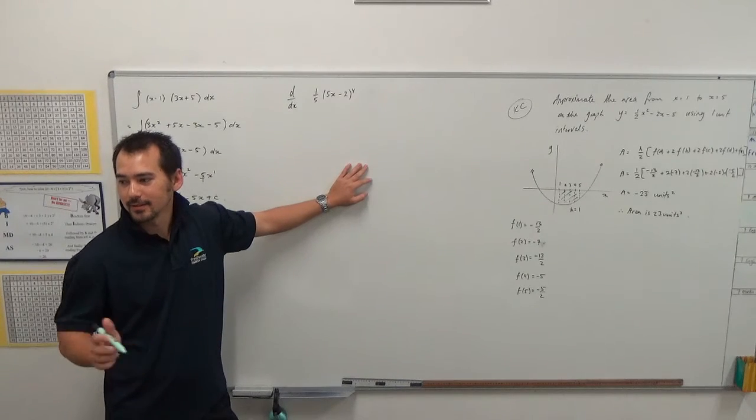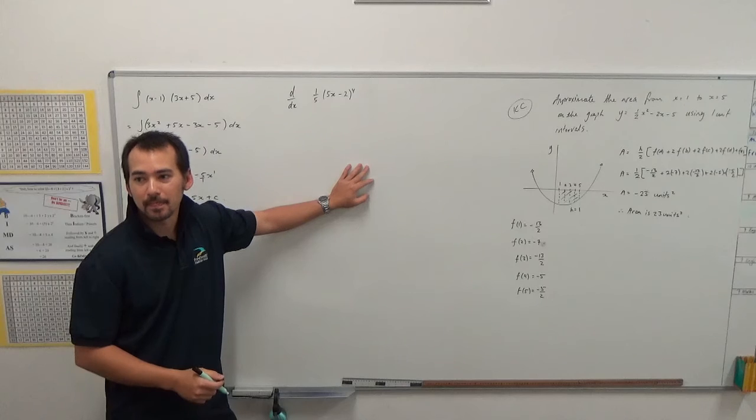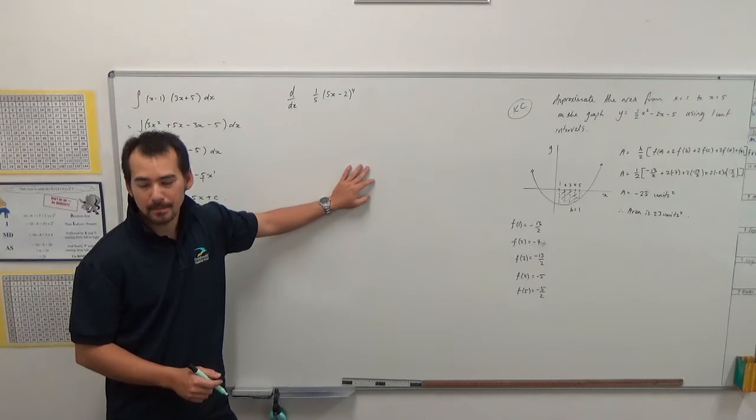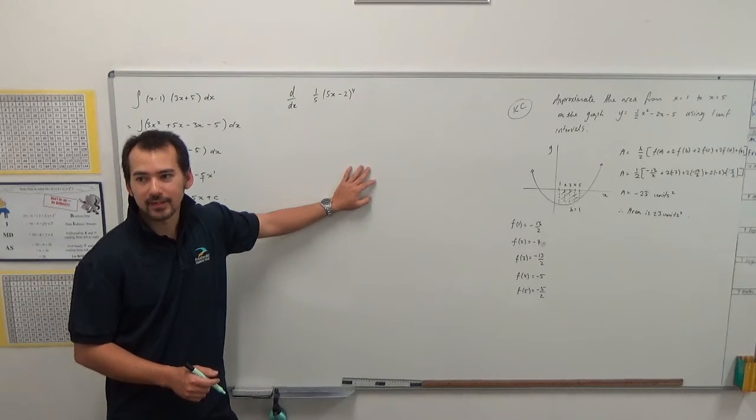The normal deriving of a chain rule. So what's the procedure? You derive the outside of it multiplied by the derivative of the inside, that's right.